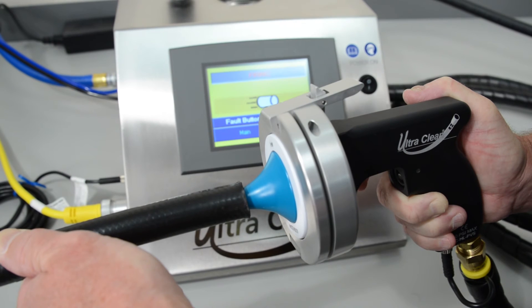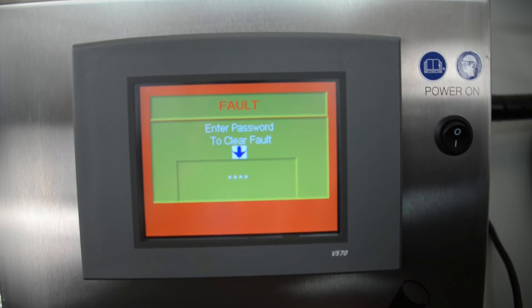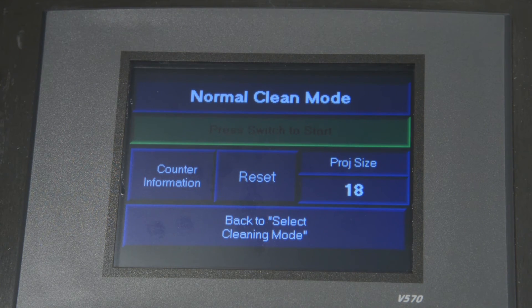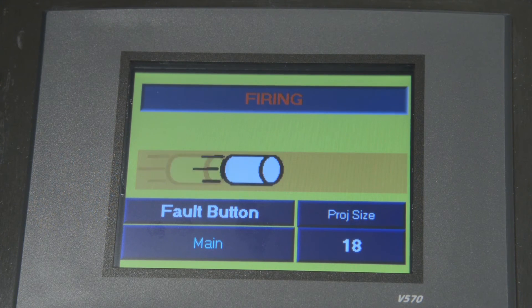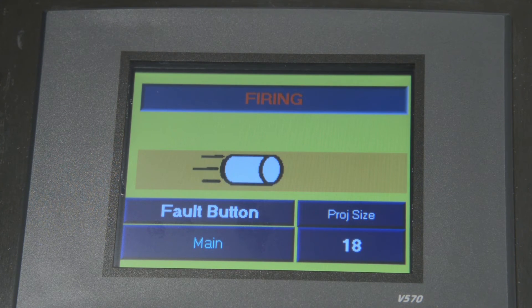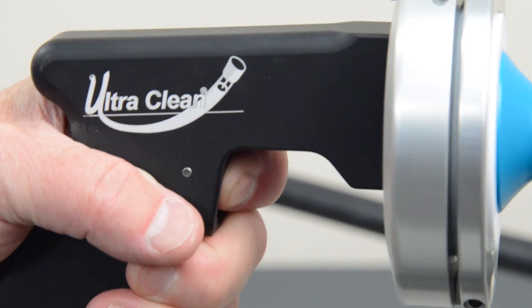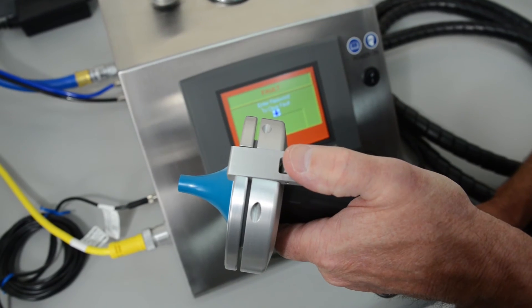The PVS has a fault mode to ensure that a projectile is never left in a tube or hose assembly by mistake. The operator will know that something is wrong when the compressed air continues to blow. If this should occur, simply press and release the electronic foot switch or trigger and the air will turn off and the screen will blink red with the word Fault.